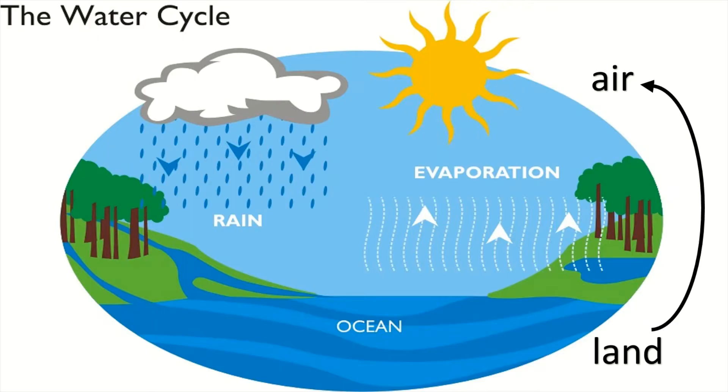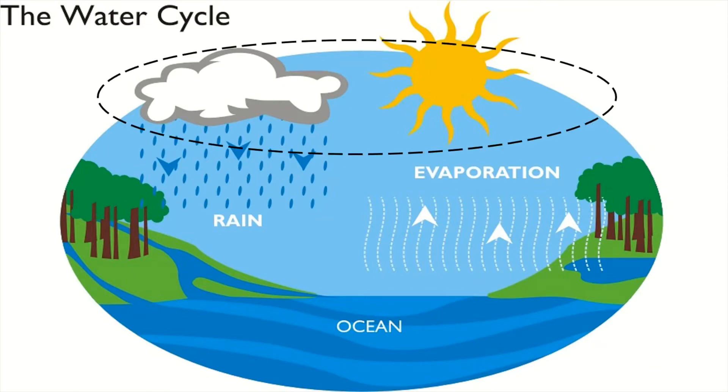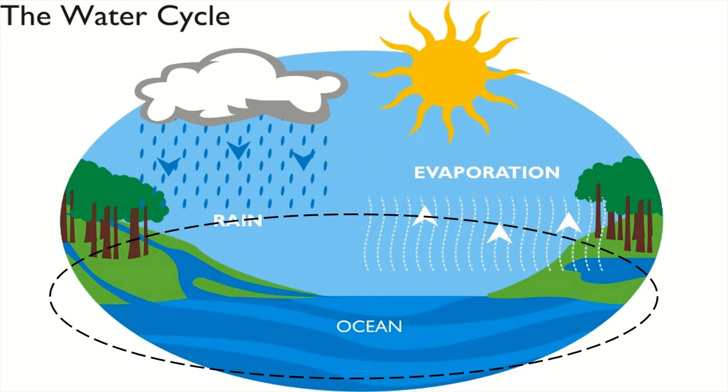The water cycle is the process of water moving around between the air and land. To understand it properly, we should learn it in detail. The definition tells us that water moves between the air and land, so it has some connection with both. Now the question comes to mind: how does water go up in the air and come back on land again?